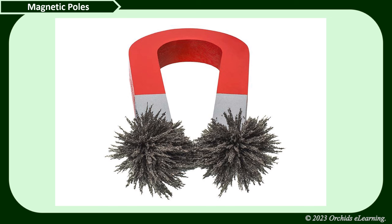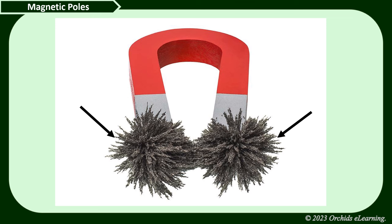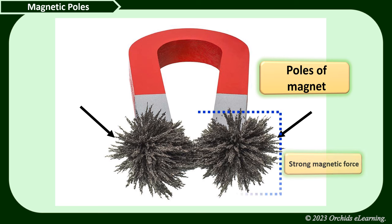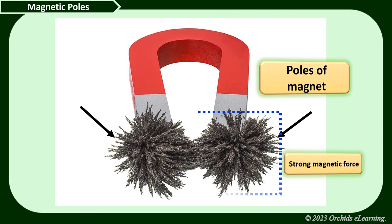When magnetic materials are brought close to a magnet, they do not stick evenly to all parts. Most of them stick on certain parts called the poles of the magnet. Magnetic forces are the strongest at the poles. There are two types of poles in every magnet irrespective of its shape — the north pole (N) and south pole (S). The two poles cannot exist independently.